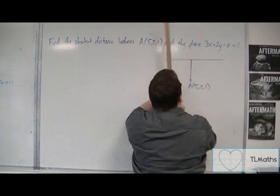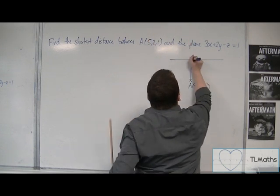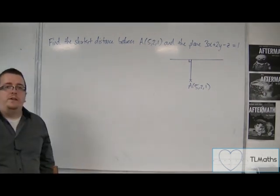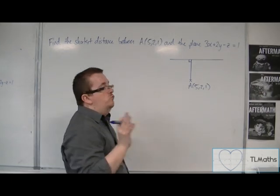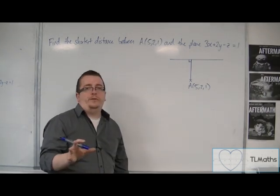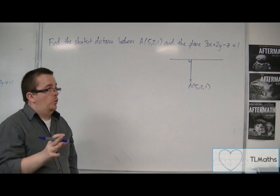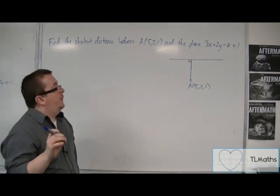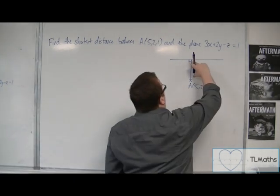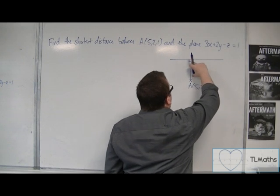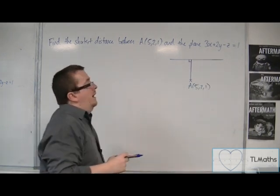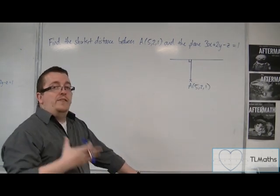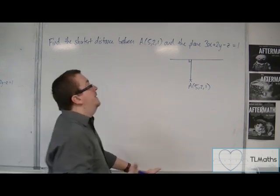If I was to draw a line between the point and the plane, they would intersect at right angles in order for that to be the shortest distance. I know a vector that will get me in that direction, and that's the normal vector of the plane.